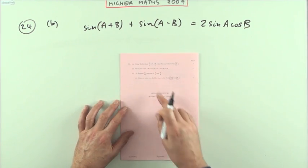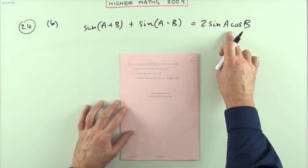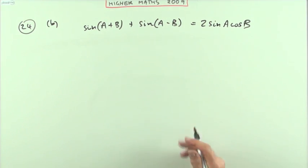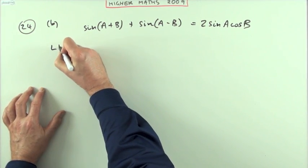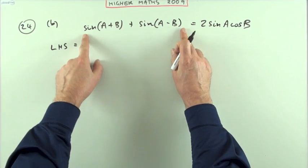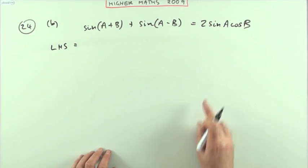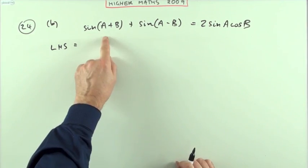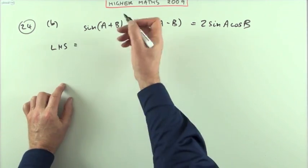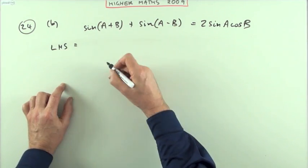Part B then. Show that sin(A+B) + sin(A-B) is equal to this. Treat that as an identity. So I'm going to start with this. Left hand side equals. I'll take this side and rearrange it to look like this side. So this side will be obviously just use those expansions, which you've either remembered or you've just looked at at the front.